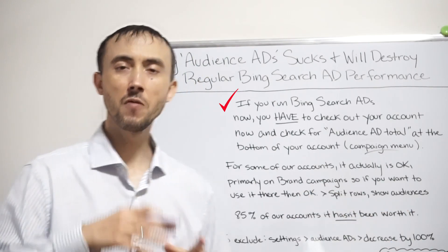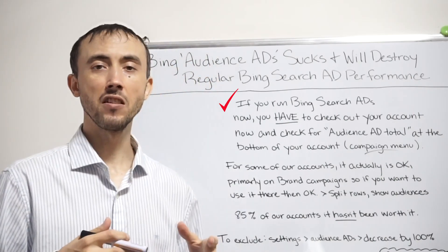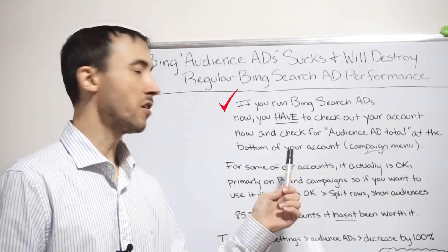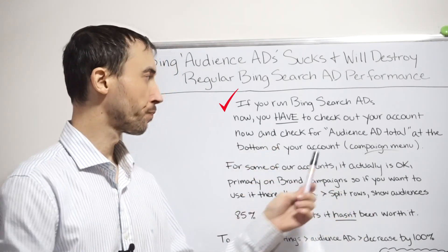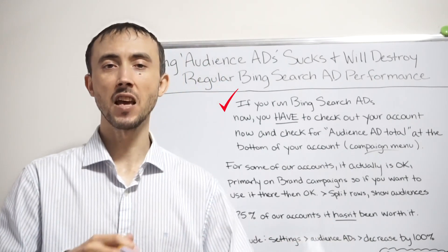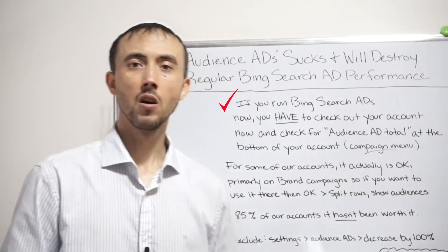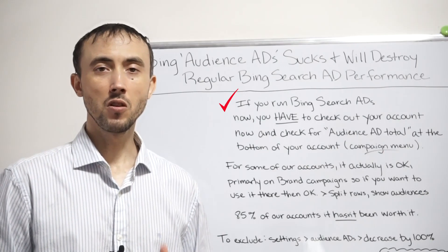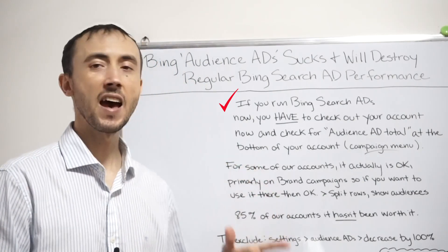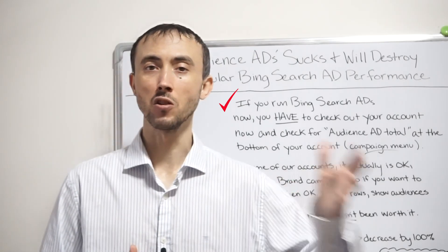If you have conversion tracking, you'll notice — probably 90% of the time — that the number of conversions and cost per lead or ROI under the "Audience Ad Total" row will be much, much worse than what that same cost per lead or ROI is under the "Search Ad Total" row. And with that, you can see right away how much money you've been throwing away on these display ads that Bing automatically gets you to do when you start a Bing search campaign.